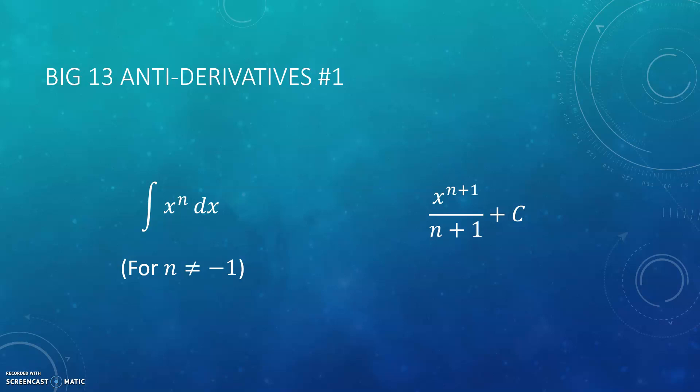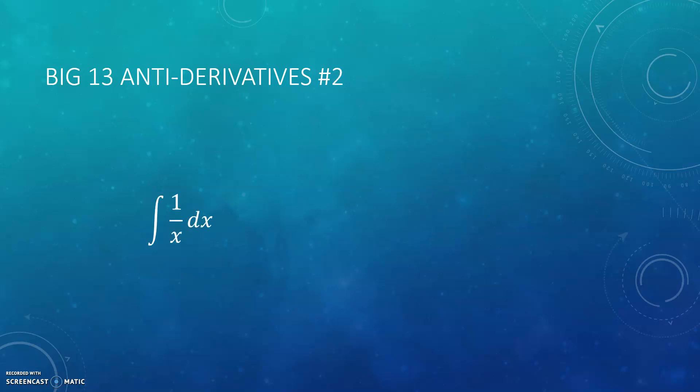I also want you to notice why it doesn't work for n equals negative one: you would be dividing by zero, and that's no fun. So here is the rule you use if n is equal to negative one. Another way of thinking about that is your function is 1 over x. The antiderivative for 1 over x is the natural log of x, but we put absolute value bars around it because natural log cannot include negative numbers. We need the absolute value bars to make sure we're not violating the domain of natural log.